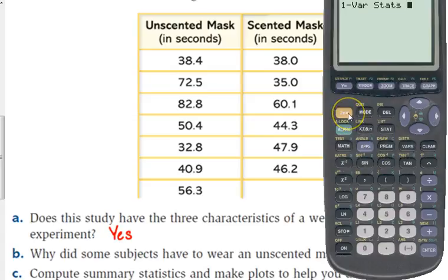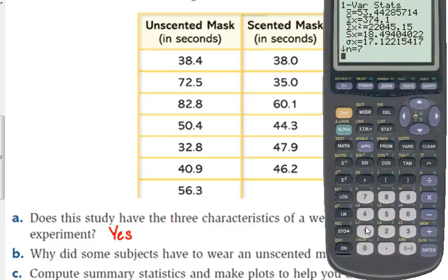And we need to tell it which set of data we're talking about, so you need to press second and the number one, and that tells the calculator to look in list one and do the statistics for that set of data. Now, there are a few important things that we need here. I'll explain what all these things mean. We don't need all of them right here, but X bar represents the average of that set of data. X bar is the average.